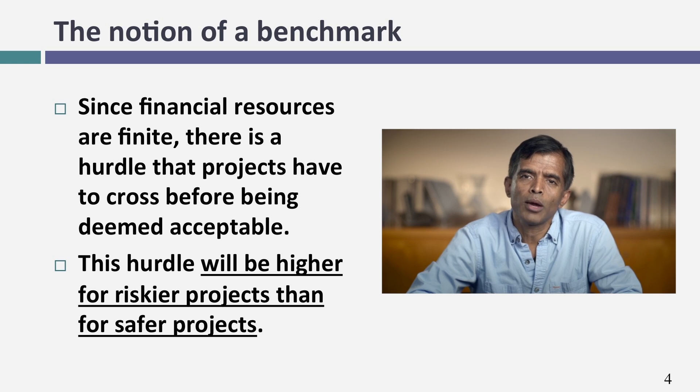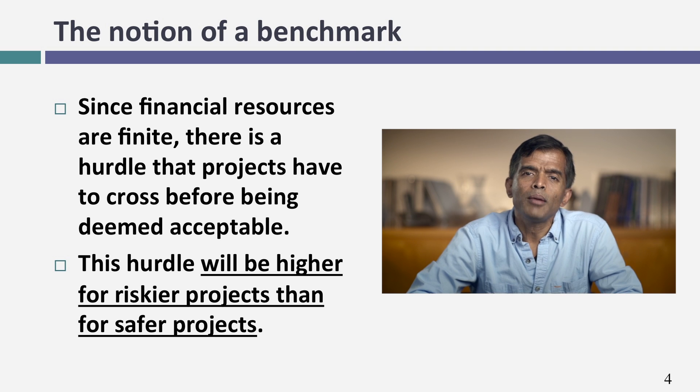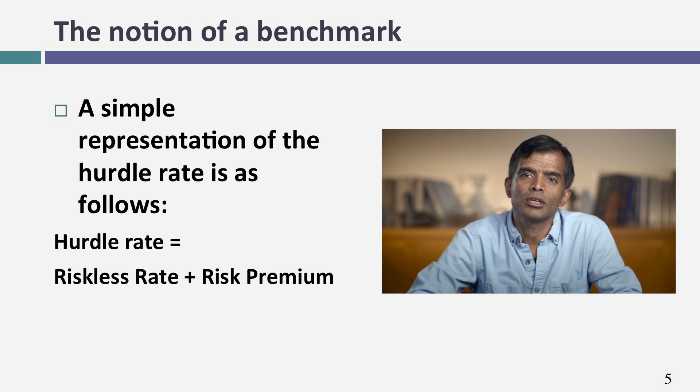Let me give you the building blocks for a hurdle rate — I call it a benchmark. When you make an investment, you need to tell me what you need to make on that investment to break even. Not even to be happy, but to break even. That benchmark becomes the hurdle rate. There are two pieces to it: the first is what you would make on an investment with absolutely no risk — the riskless rate. Then we add a risk premium on top to reflect that some investments are riskier than others.